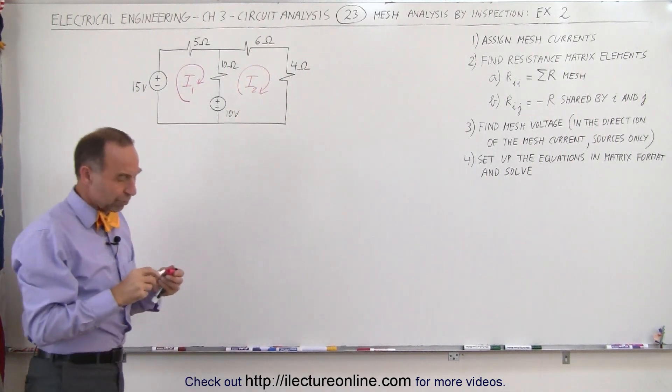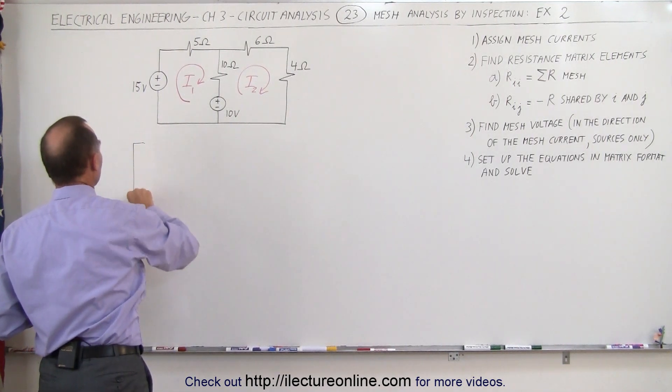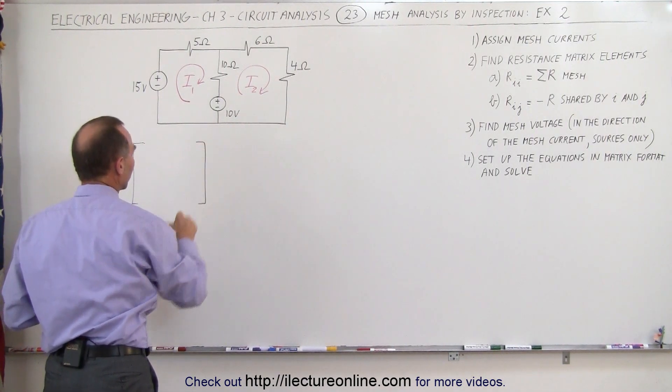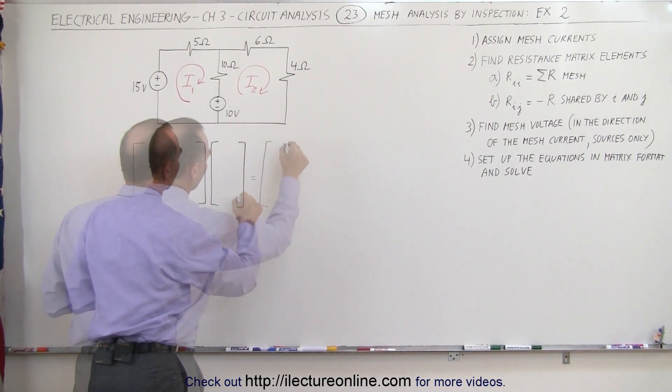The next thing we want to do is find the resistance matrix elements because what we eventually want to end up with is two equations. There's two unknowns here, so we want to put two equations in the matrix format and it will look like this.